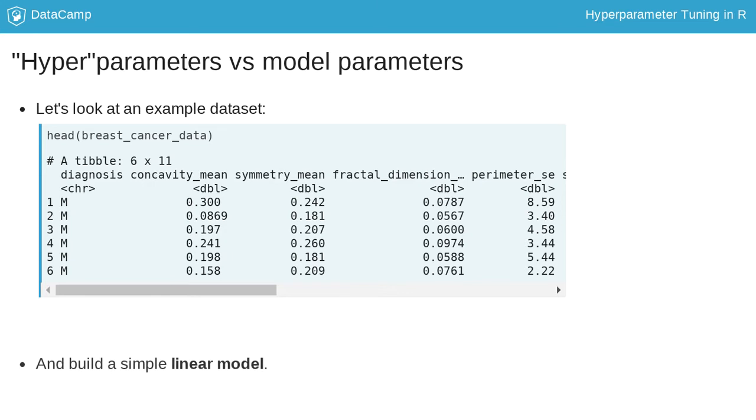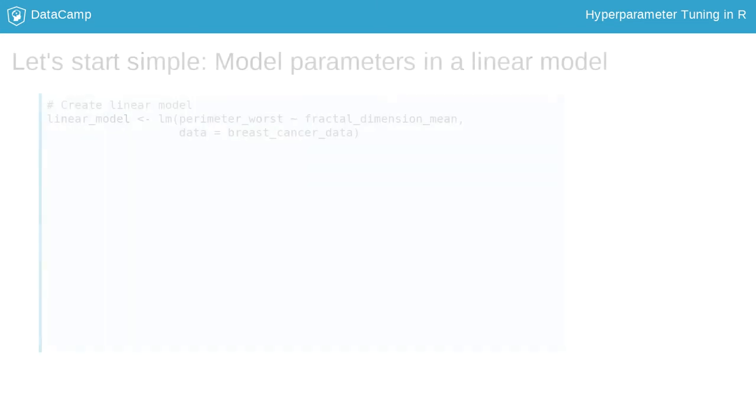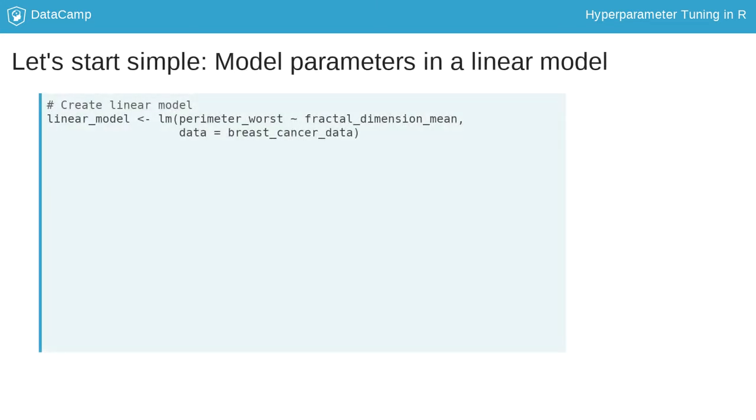Let's have a look at a simple linear model. A linear model models the relationship between variables by fitting a linear function. Here we will pick two features at random: perimeter worst and fractal dimension mean, and look at their linear relationship. We could of course make our linear model much more complex by adding additional features and more complex interactions, but for this purpose we will keep it simple.